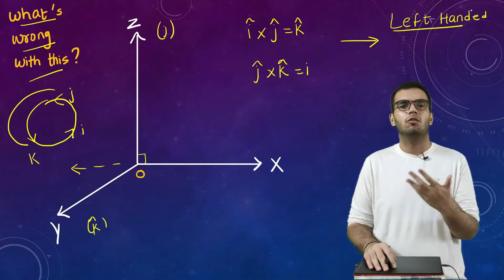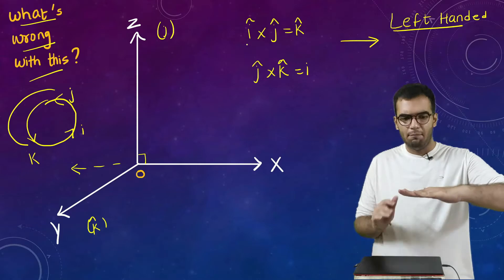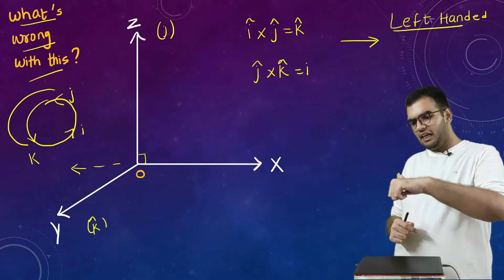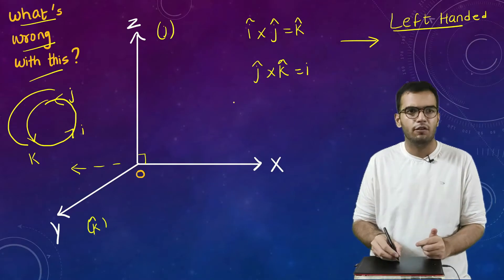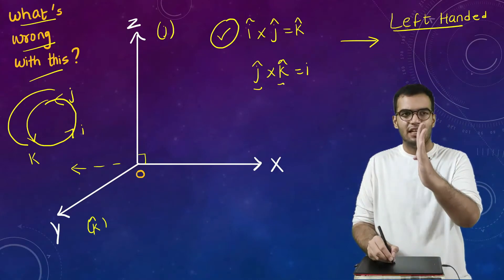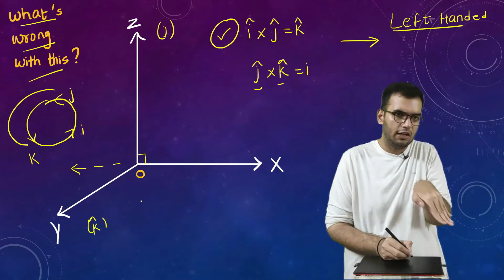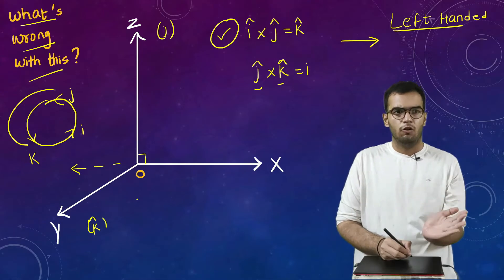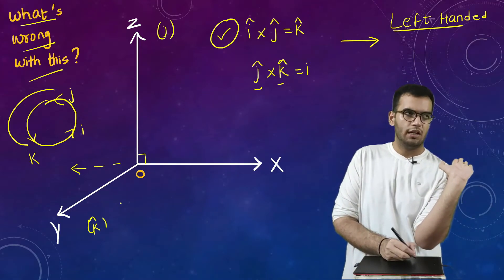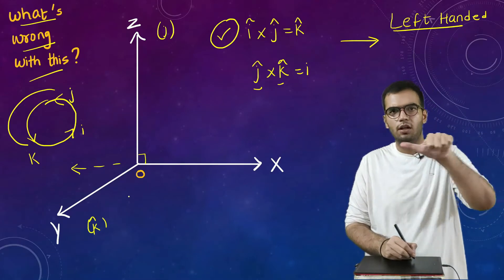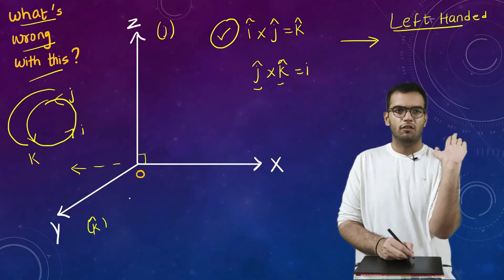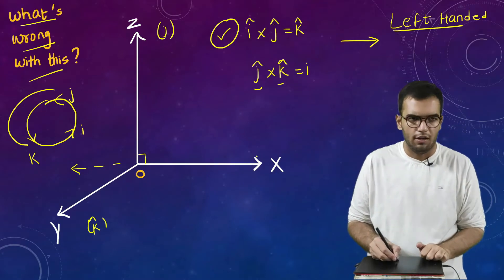Now if I take my left hand and do the same operation — this is my i-cap (x-axis), this is my j-cap in this direction — if I cross them, I get k-cap in the outward direction. Outward is drawn as upward in a 2D physics graph. If I take j cross k, with j-cap in this direction and k-cap in the upward direction, y-axis is actually in the outward direction and z is in the upward direction. Crossing them gives me i-cap in this direction, which is correct.